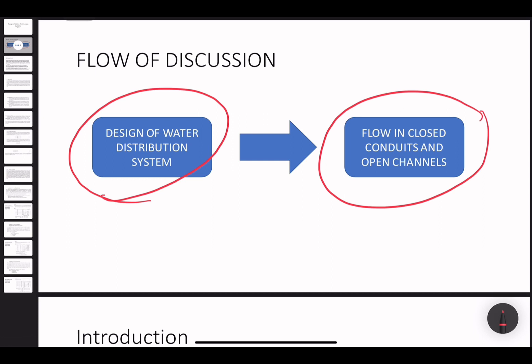There are two classes on how we will be able to distribute water: first is via closed conduit and open channel. When we say closed conduit, that is the general term we use for pipes — circular pipes, rectangular pipes. Not only will we talk about pipes or closed conduits, but we will also be talking about pumps — how we cater water towards areas that are higher in elevation compared to the source. When we say open channels, these are open canals, uncovered channels of water seen along the road.